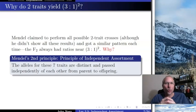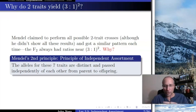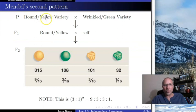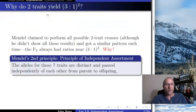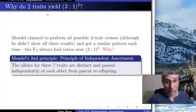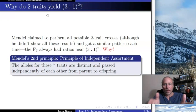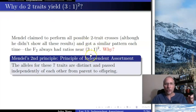As before, Mendel was careful — he didn't just fly off the handle based on one study. Just like we saw before, he dug around and found seven total traits that followed the original pattern. Here we're only looking at a combination of two traits — seed shape and seed color. He claims in his paper to have done every possible combination of pairs of those seven traits. That's a lot of work, and he didn't report all the data, but it doesn't matter — we've repeated those experiments and found his statement is correct.